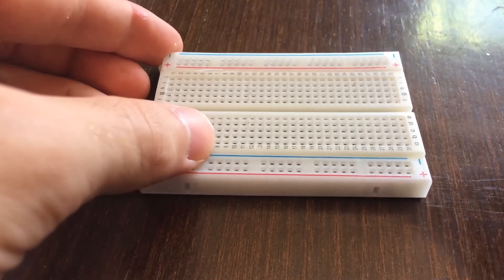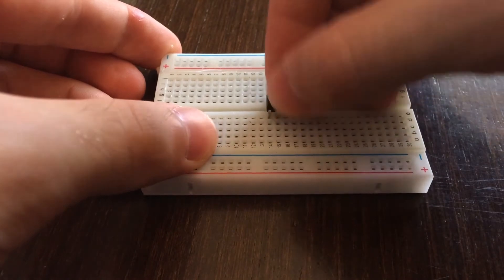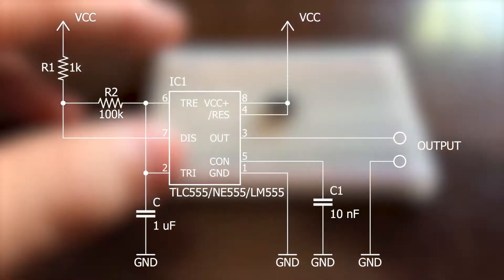Let's build the astable circuit on a small breadboard. Simply by following the schematic, it took me around 4 minutes to assemble it.